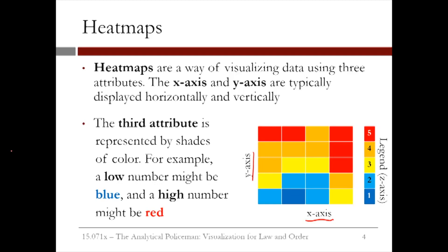In this example, lower values in the third attribute correspond to colors closer to blue, and higher values in the third attribute correspond to colors closer to red. For example, the x-axis could be hours of the day, the y-axis could be days of the week, and the colors could correspond to the amount of crime.